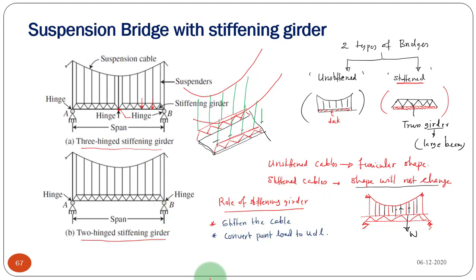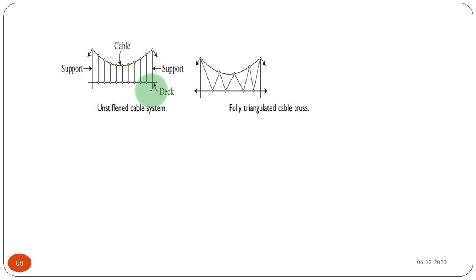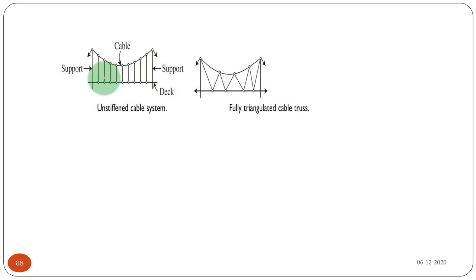This is the form of an unstiffened cable system. The deck is directly connected to the cables through hangers or vertical suspenders. This is a simple unstiffened cable system — it may be a bridge, but the span and loading will be very small. For a heavily loaded bridge or long-span bridge, we have to provide stiffening girders to maintain the cable profile, otherwise the deck will have a lot of movement causing discomfort to users.